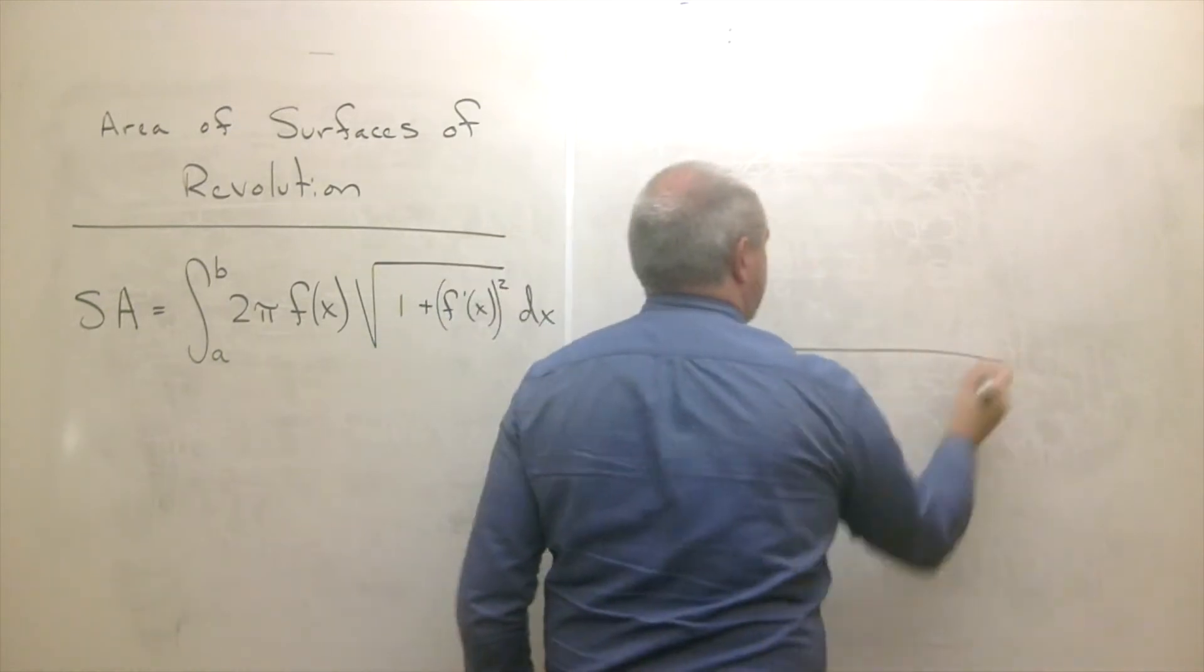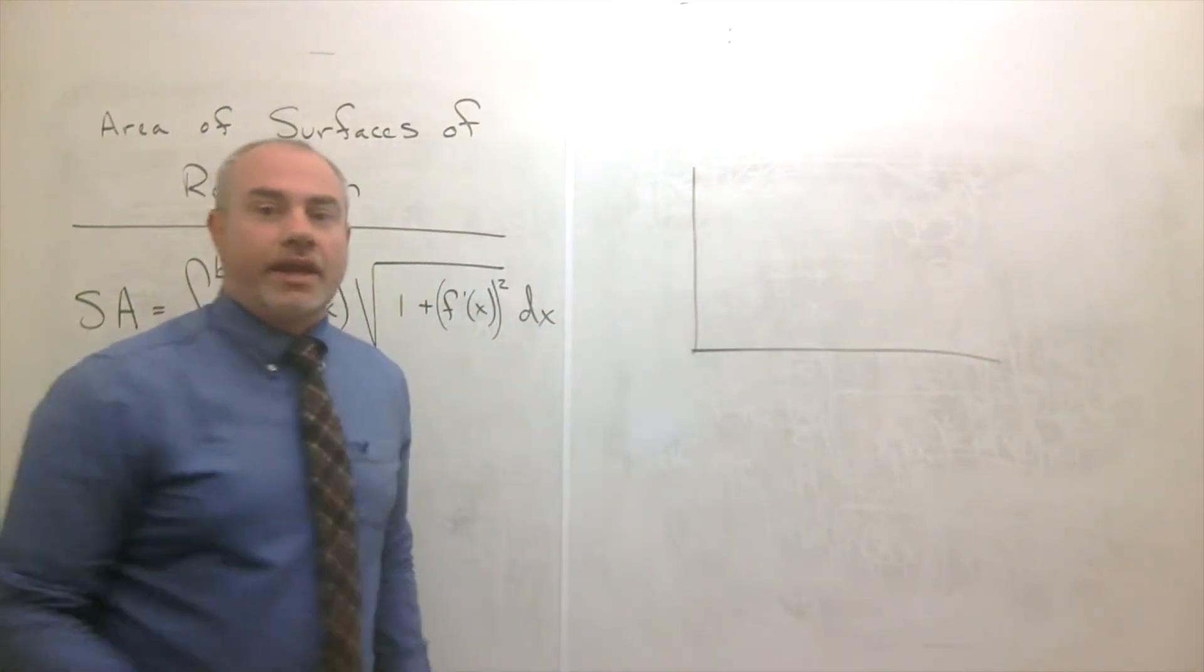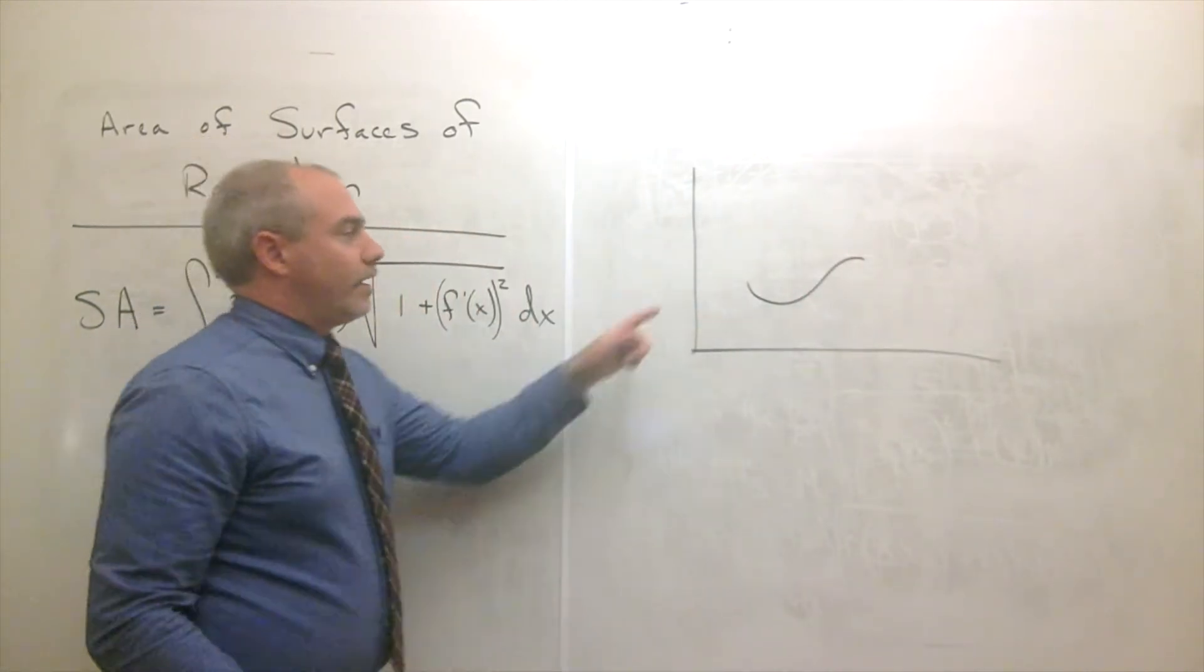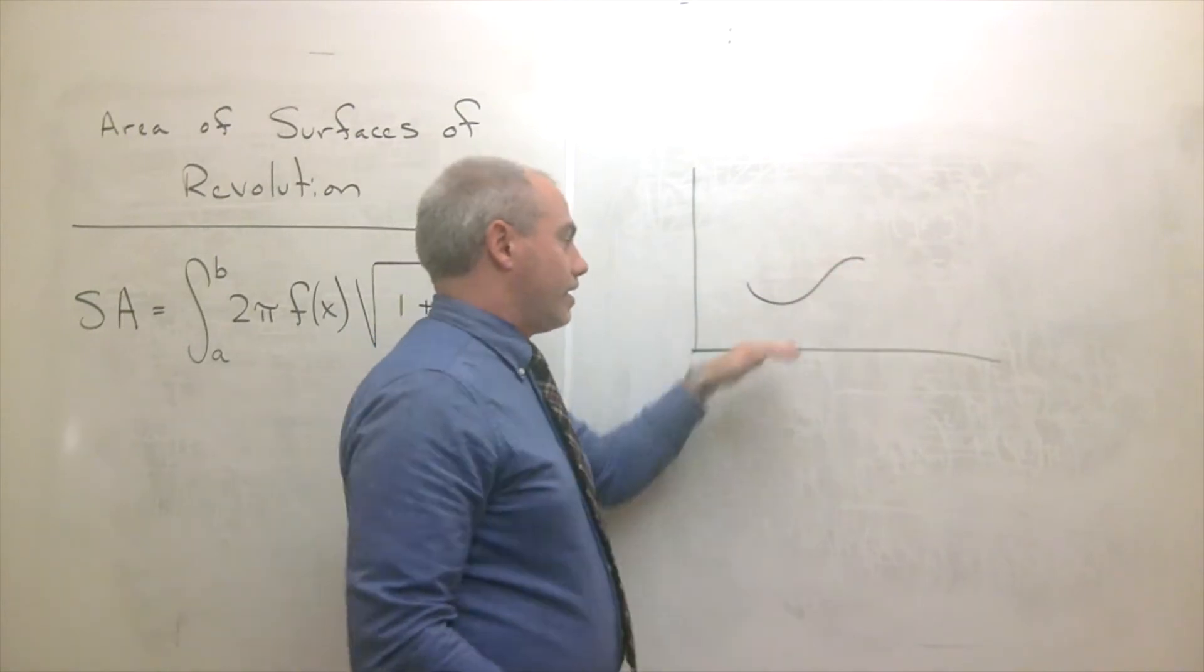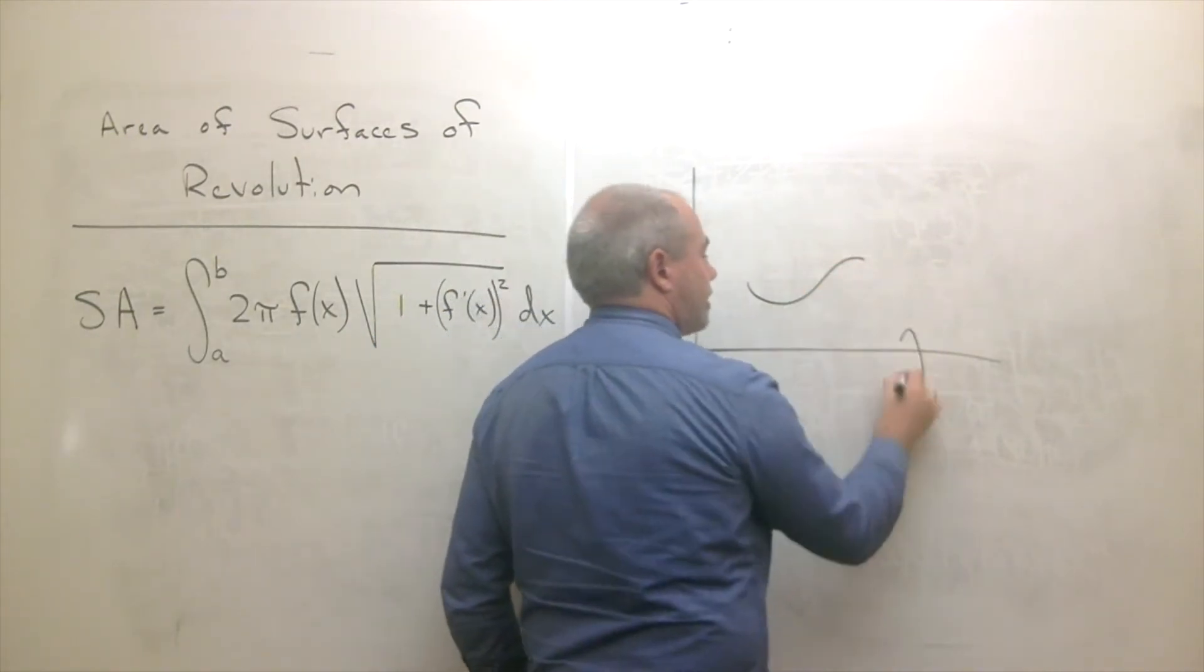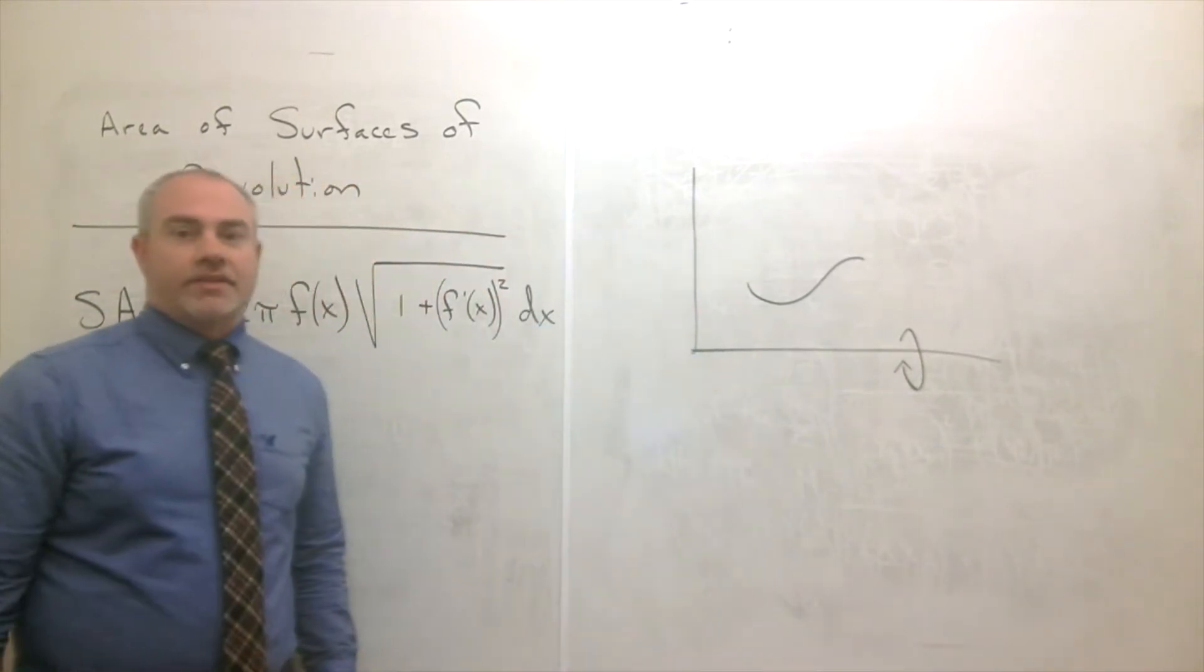So let's say that we have a graph and we have a curve. Here's a curve or a function that is sitting over the x-axis, and we take that function itself and we spin it around the x-axis.